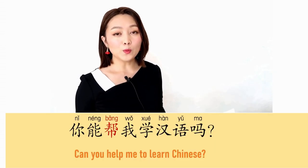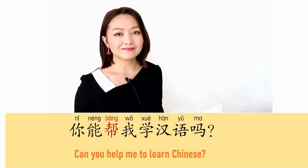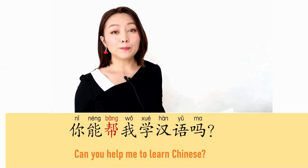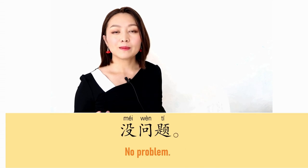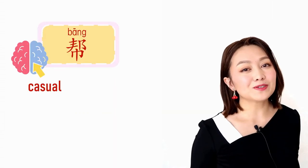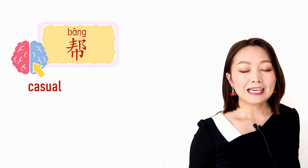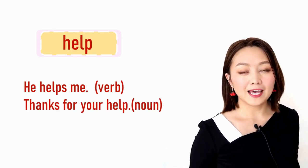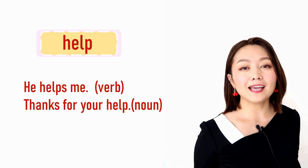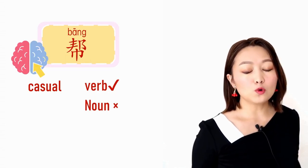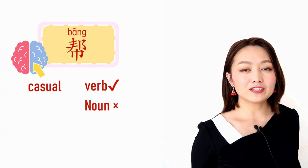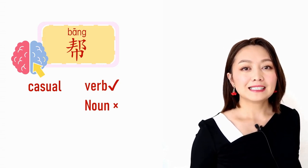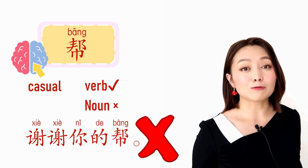比如说,你能帮我学汉语吗?没问题。Another thing we need to remember about 帮 is it's just a verb, not a noun. You know, in English the word 'help' can be a verb and a noun. 可是中文不一样 — 帮 is just a verb, not a noun. So you can't say 谢谢你的帮 — that's wrong.